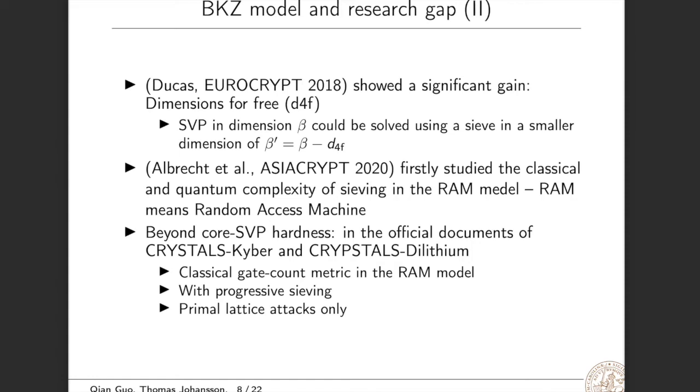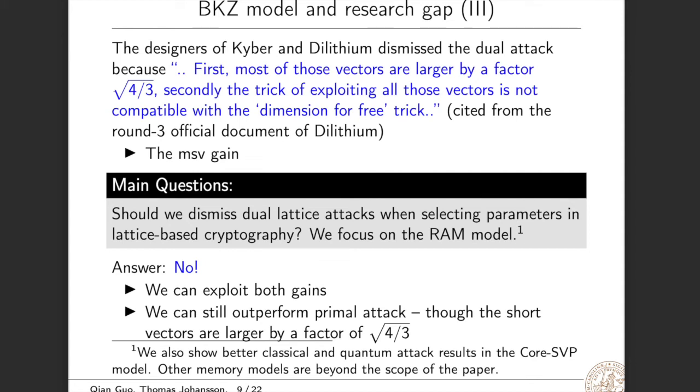So this research allows us to study the concrete complexity of lattice-reduction algorithms without removing the sub-exponential terms. Based on this research, in the official documents of Round 3 Kyber and Dilithium, the designers studied the beyond-Core SVP hardness, meaning the classical gate count metric in the RAM model. They also take into consideration progressive sieving, but they only consider primal lattice attacks. They dismissed the dual lattice attacks because first, most of those vectors are larger by a factor of sqrt(4/3). Secondly, the trick of exploiting all those vectors is not compatible with the dimension-for-free trick. This sentence is cited from the Round 3 official document of Dilithium. Here we call the trick of exploiting all those vectors the MSV gain.